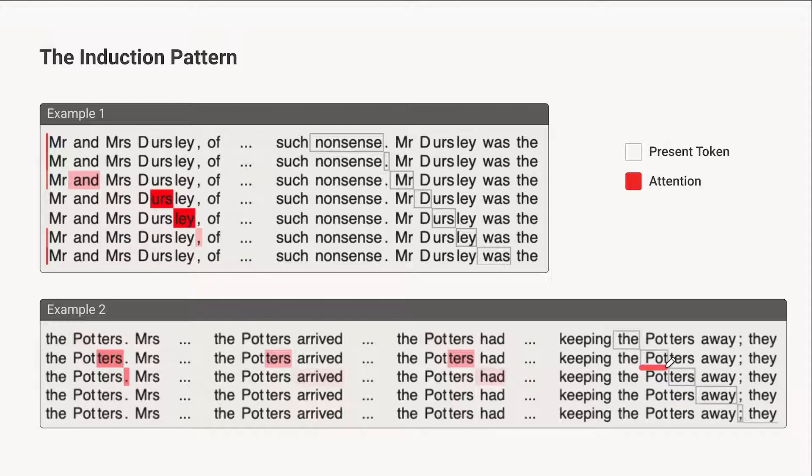If the present token is POT, well, we have the potters, so we attend to the next token, the token that follows POT previously, TERS. We're starting to get a pretty good hypothesis of what's going on here, which is that somehow this attention head always attends to the token that follows previous copies of the present token. So if we're on POT, the previous copy was POT, and then we get TERS.